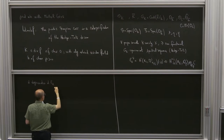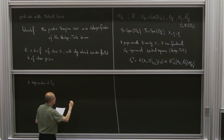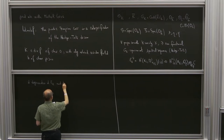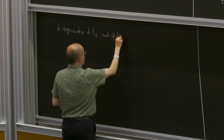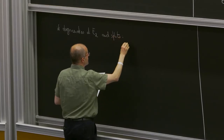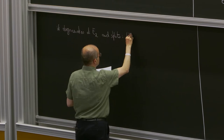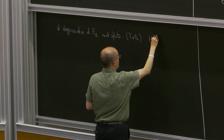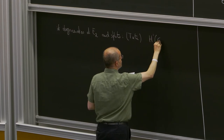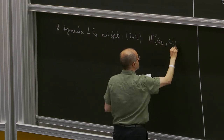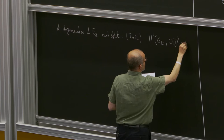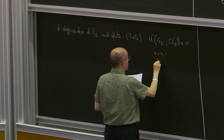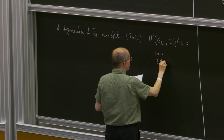The abutment filtration splits, and these two statements are a consequence of a result of Tate on Galois cohomology: namely that H^i(G_K, C(j)) = 0 for i equal to 0 and 1, and j not equal to 0.